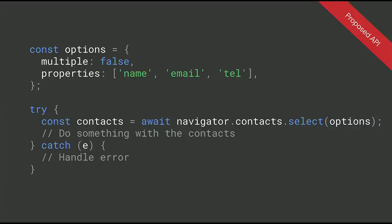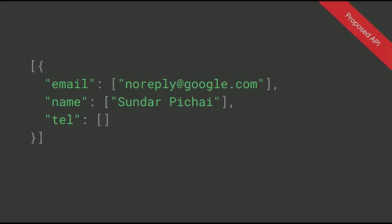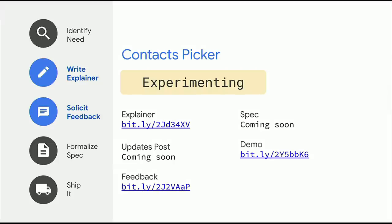Opening the contacts picker starts with a call to navigator.contacts.select, passing an options object with the information you'd like — here I just want one contact, and from this contact I want the name, the email, and the telephone numbers. The call returns a promise that resolves with an array of the contacts selected by the user. The contacts picker will only work when served from a secure host and can only be shown after a user gesture. Users can also explicitly choose which contacts they want to share and see exactly what is being shared before they share it. We're in the early phases of experimentation — the explainer has been written and a first implementation is available behind a flag.